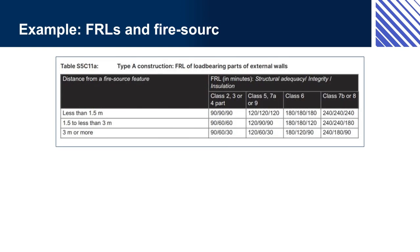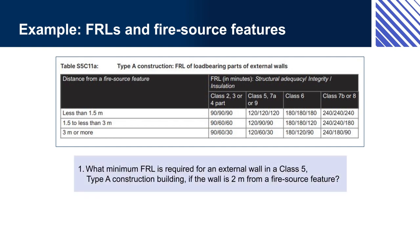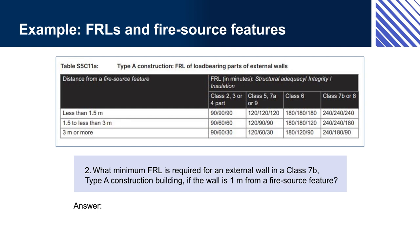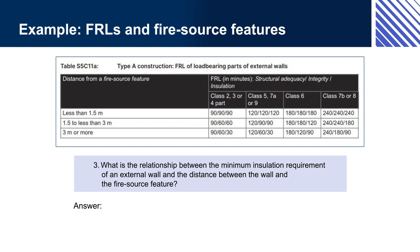Example — FRLs and fire source features. Question 1: What minimum FRL is required for an external wall in a Class 5, Type A construction building, if the wall is 2 metres from a fire source feature? Answer 1: FRL = 120/90/90. Question 2: What minimum FRL is required for an external wall in a Class 7B, Type A construction building, if the wall is 1 metre from a fire source feature? Answer 2: FRL = 240/240/240. Question 3: What is the relationship between the minimum insulation requirement of an external wall and the distance between the wall and the fire source feature?